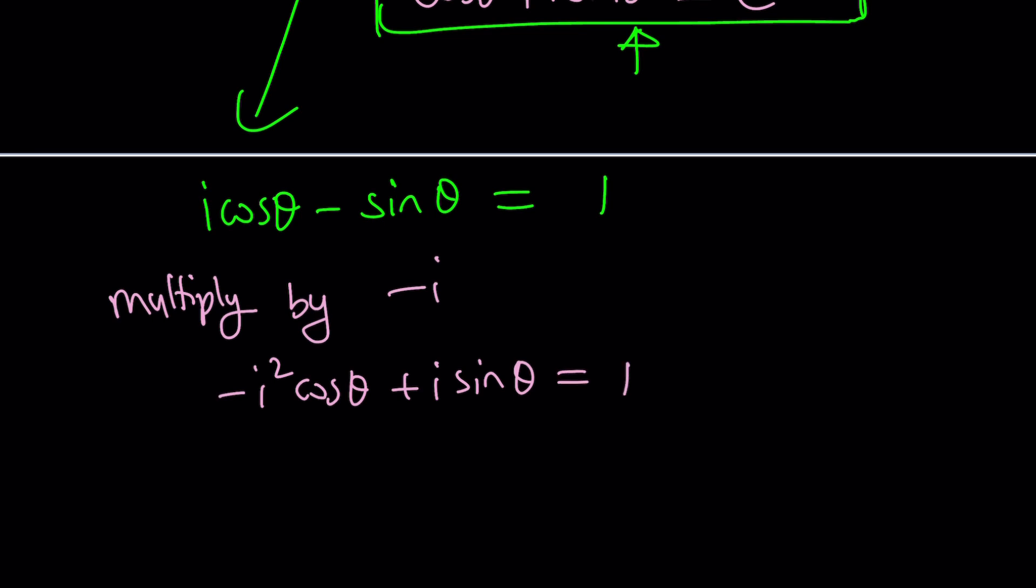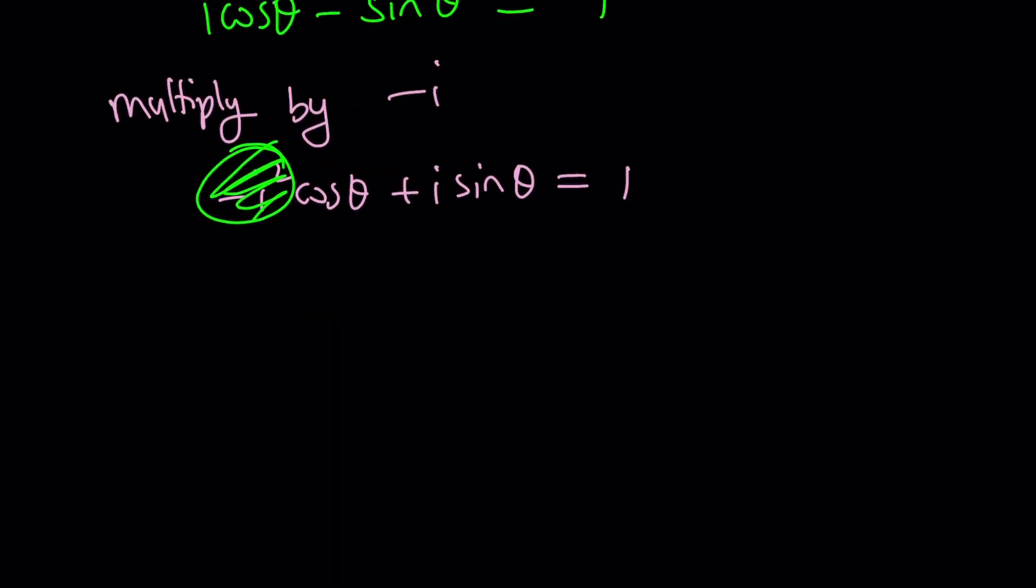Now what did I tell you about i²? i² is -1, so -i² is positive 1. Boom, it's gone. Now we have the beautiful equation: cos θ + i·sin θ, which is e^(iθ), and it equals -i. Does that mean iθ = 0 and θ = 0? No, it's not that simple. We're going to have to complexify it.